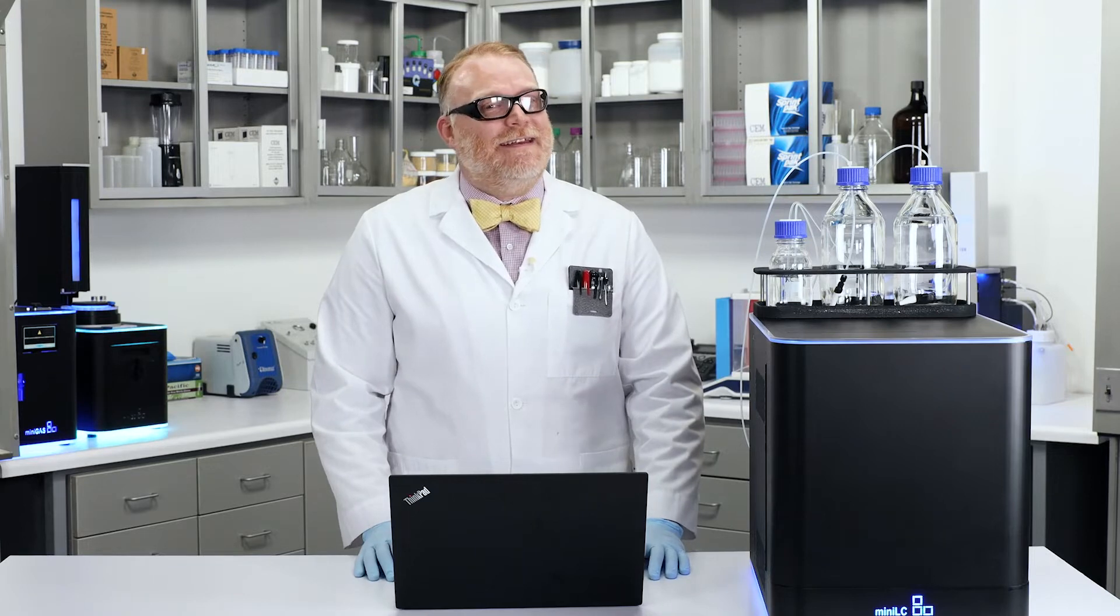It looks as if the Mini-LC is done. Let's take a hit into that data. Now that we're in the data, let's show you three chromatograms of 50 parts per million overlaid on top of each other.